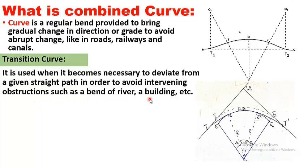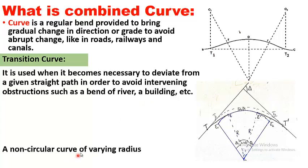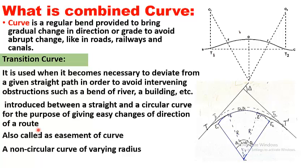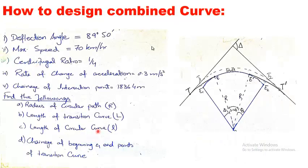A transition curve is a non-circular curve of varying radius. As you can see, this is the part of the simple circular curve which is combined with a transition curve to give a smooth deviation from a straight path into a circular path. A transition curve is introduced between a straight and a circular curve for the purpose of giving easy changes of direction. It is also called an easement curve.